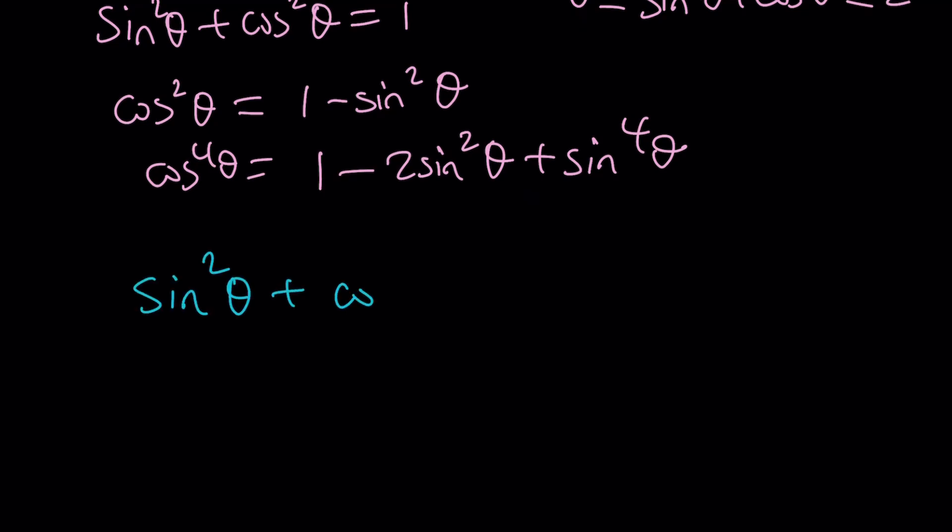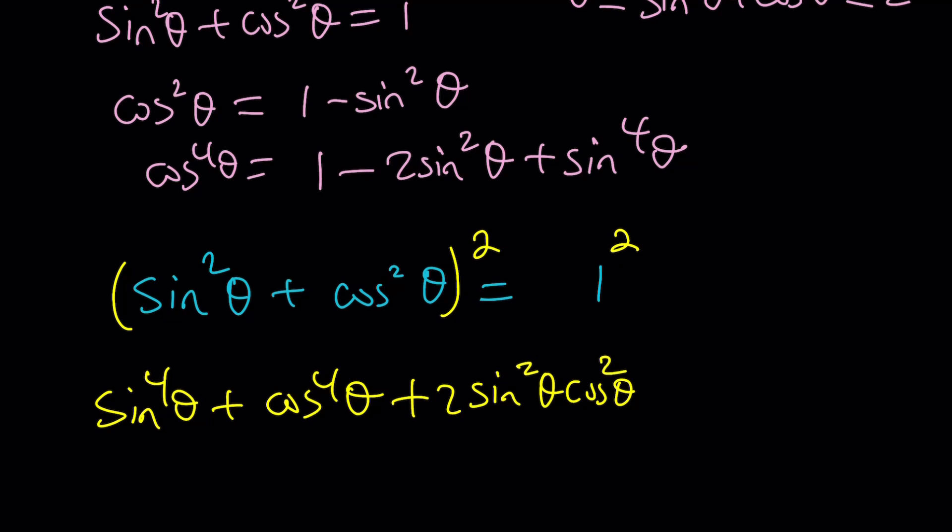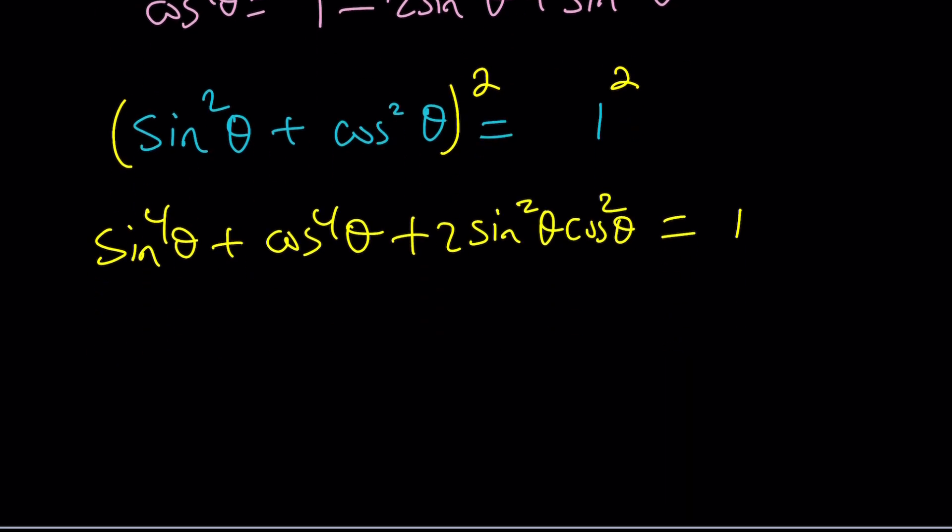Since this equals 1, I can go ahead and square both sides. That's going to give me sin⁴θ + cos⁴θ plus 2sin²θcos²θ, and the sum is still 1. With the fourth powers, this is a nice identity, and I want to isolate the sum of fourth powers because that's what I'm trying to maximize.